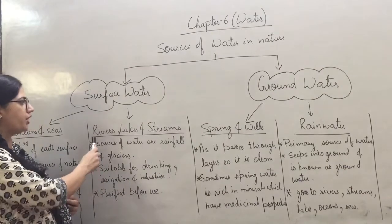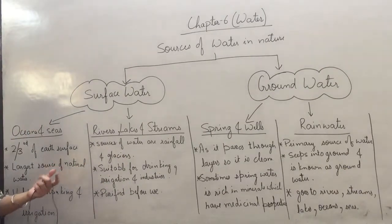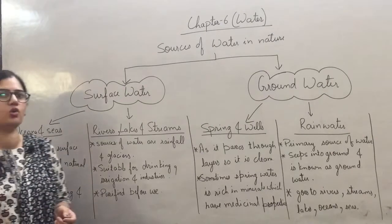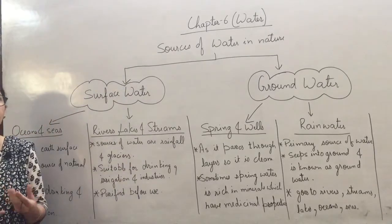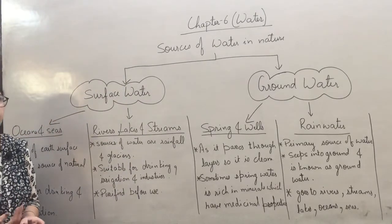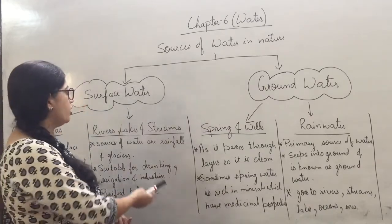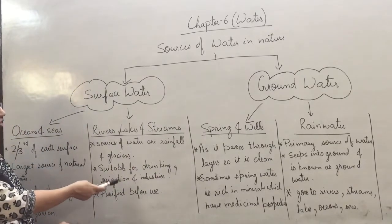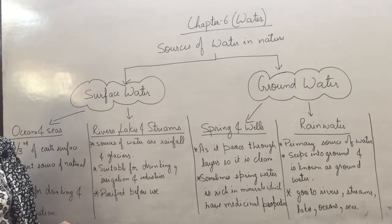Then we have rivers, lakes and streams. The water in rivers comes from snow and glaciers on mountains — when they slowly melt, they form rivers. Also, rainfall water goes into rivers, lakes and streams. This water is suitable for drinking, irrigation and industrial purposes.